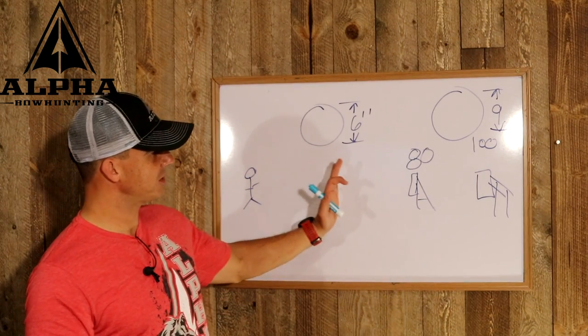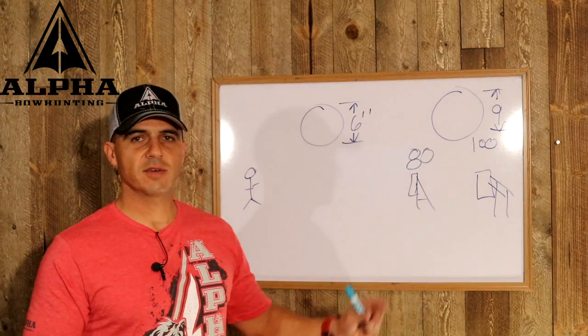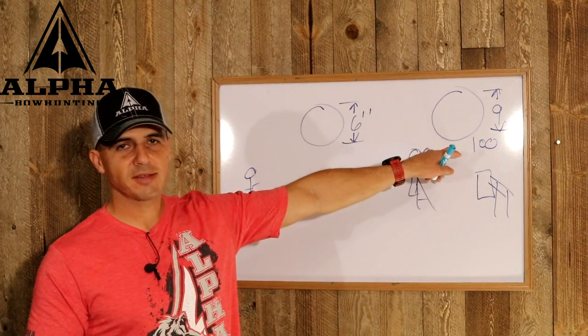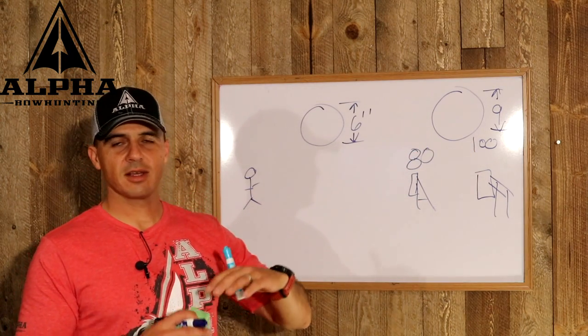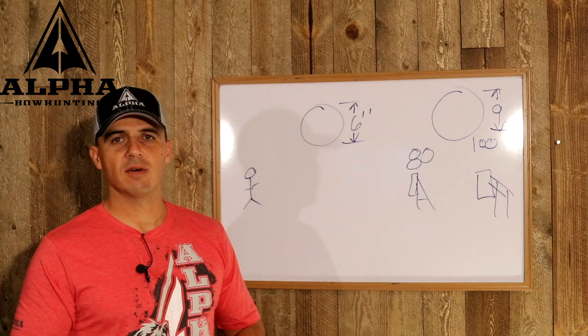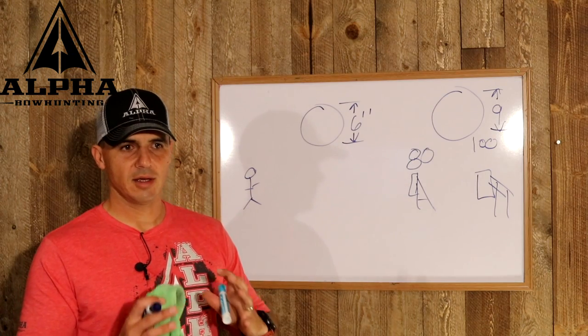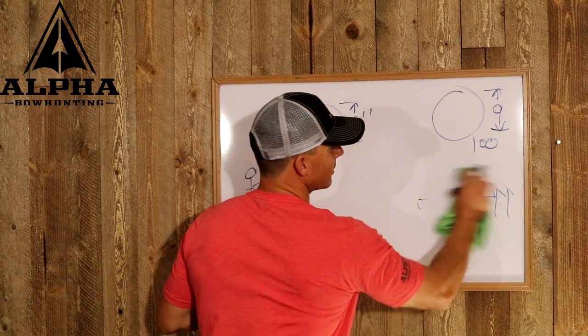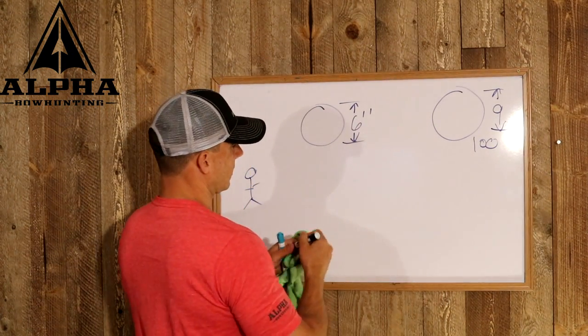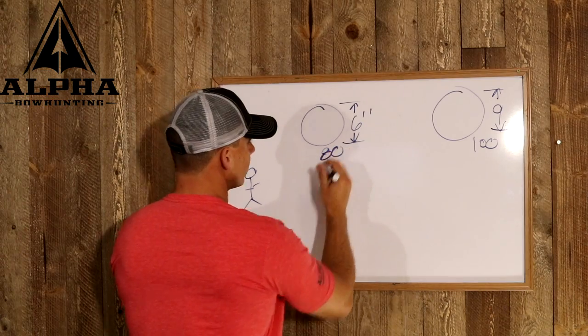You need to know what your group size is at different distances. Once you get out past eight or nine inches, in my opinion, that starts to get outside the realm of effective range and consistency. So I'm using these numbers for easy math.